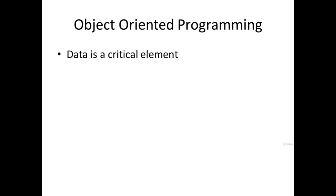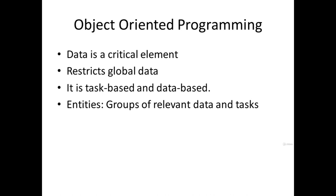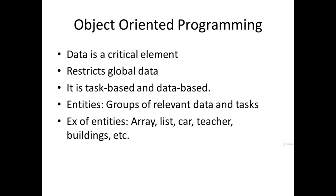In object oriented programming paradigms, data is a critical element. It restricts global data, so there is no unintended alteration of data and data integrity is maintained throughout the program. It is both task-based and data-based — it focuses on data as well as on what operations to perform on that data. Object oriented programming uses a term called entities. An entity is a group of relevant data and the tasks related to that data. Examples of entities are arrays, lists, car, teacher, buildings, and so on.